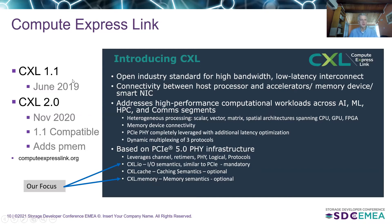On the timeline: CXL 1.1 specification was released in June 2019. Then I got involved in adding persistent memory support in the CXL 2.0 spec, which we released in November 2020. It's backward compatible with 1.1 but adds support for persistent memory, among other things. The specs are open to anyone to read at computeexpresslink.org.